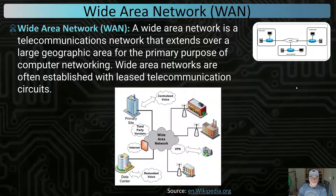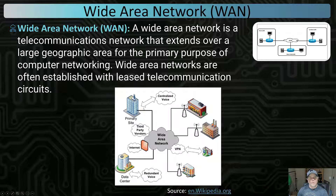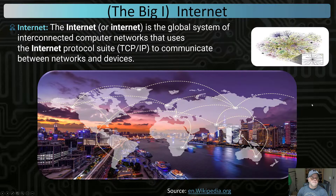A wide area network usually utilizes the internet for traffic. For example, if we have a corporate office in Dallas, Texas, and a data center in Bend, Oregon, we can communicate wide area using internet protocols to transfer data. We secure these areas with firewalls so that only approved data can get into each local area network.